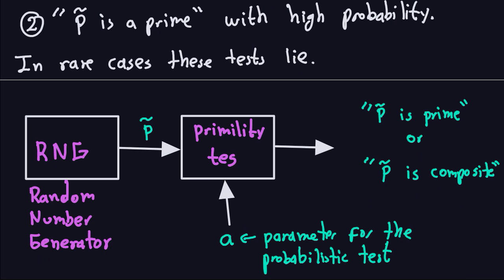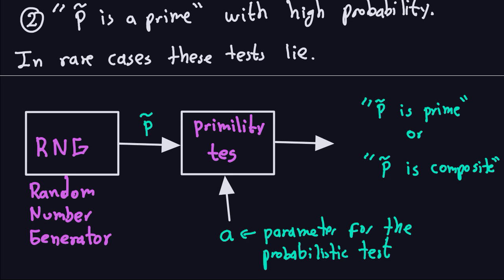The idea behind these primality tests is as follows: we use a random number generator to produce a large candidate number p̂. We then run a primality test, which takes two inputs: the candidate p̂ and a parameter 'a'. The test uses both p̂ and 'a' together. I'll explain what 'a' is in more detail later — it may seem strange to need an extra parameter just to test primality, but it turns out to be much better this way.